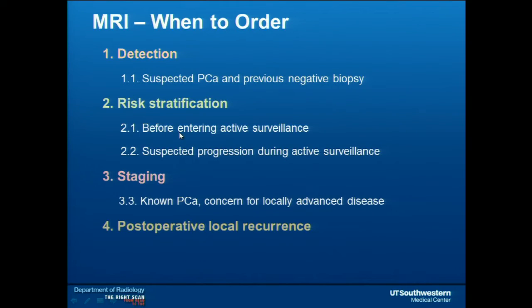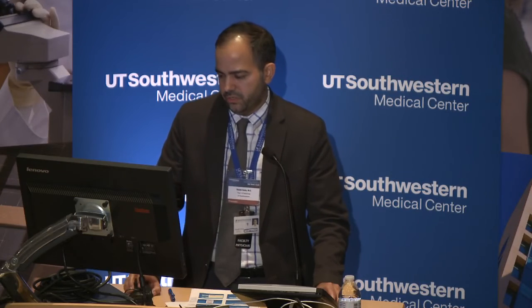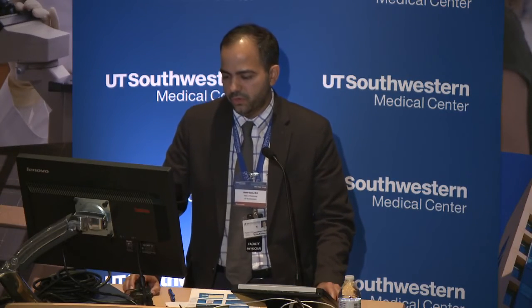Still within risk stratification, the MRI is used in the same sense for patients with suspected progression on active surveillance. For staging patients with known cancer, you want to confirm organ-confined disease, ensure there is no contraindication for surgery, or identify locally advanced disease to plan surgery in a way that achieves free margins. A less common indication is postoperative local recurrence, usually requested by urologists or oncologists.